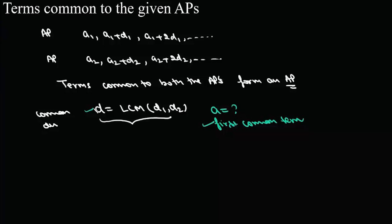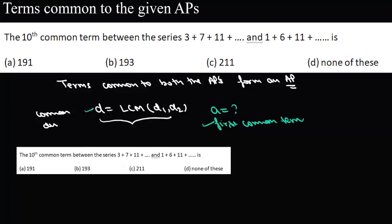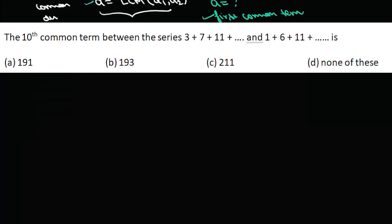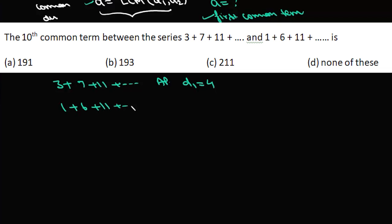Let's take an example. The question asks for the tenth common term between two series. The first series is 3, 7, 11 — it is an AP with common difference 4. The second AP is 1, 6, 11 — also an AP with common difference 5.